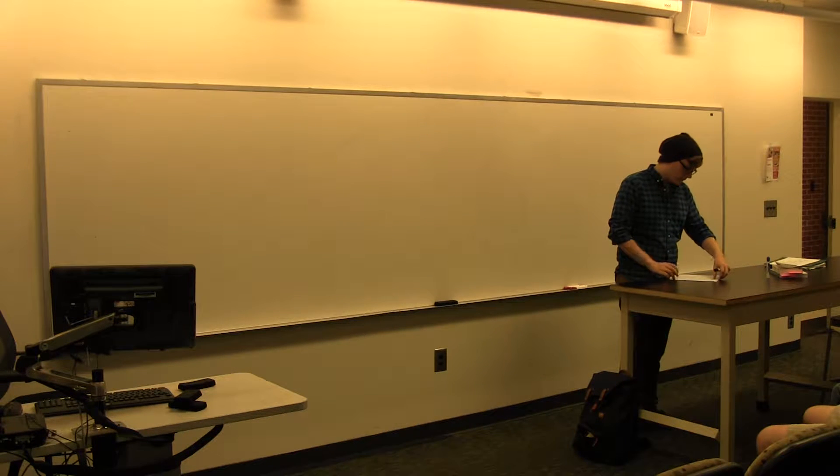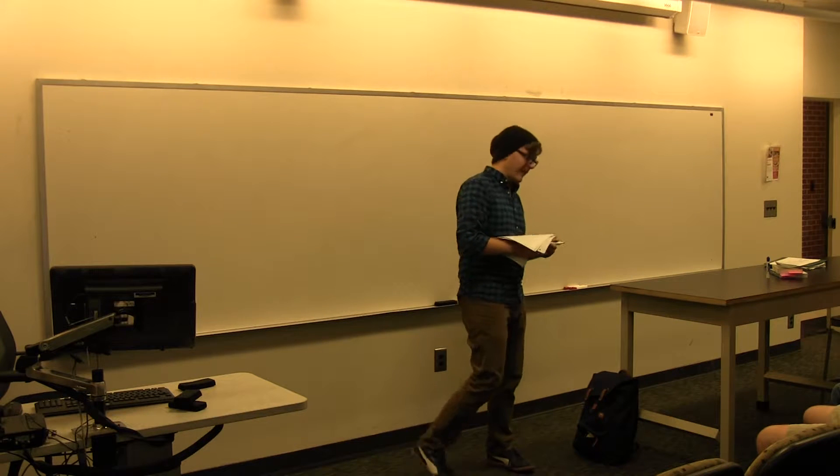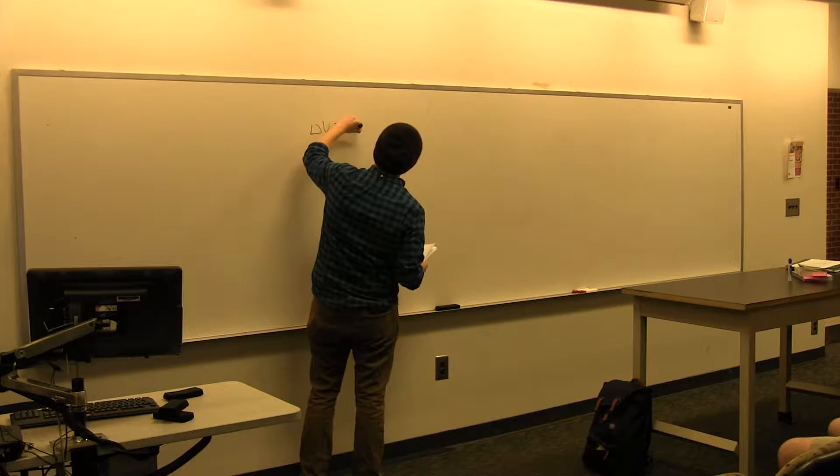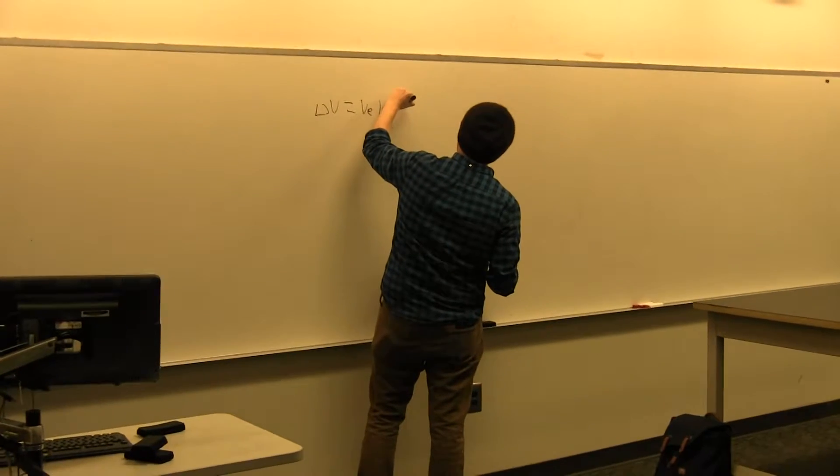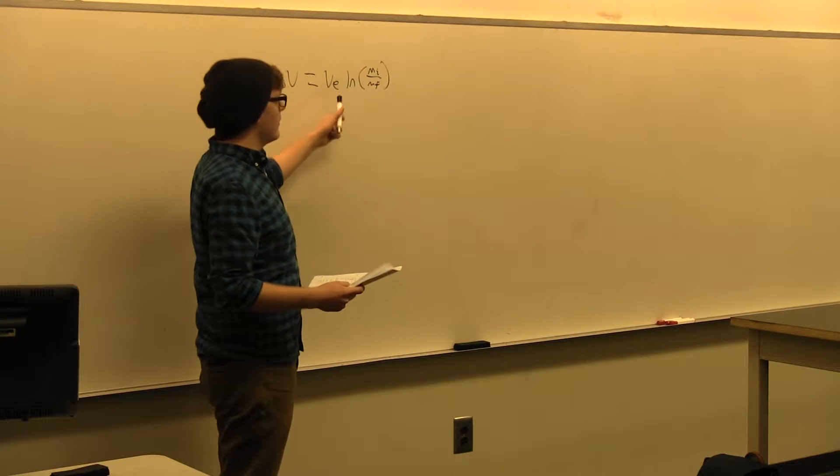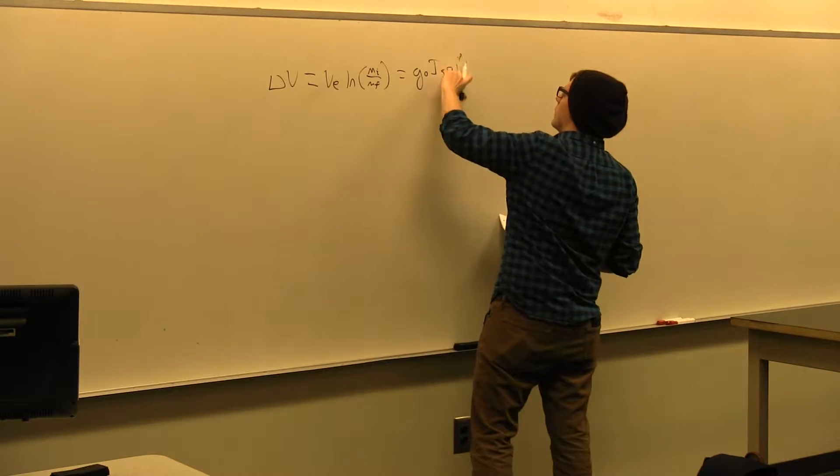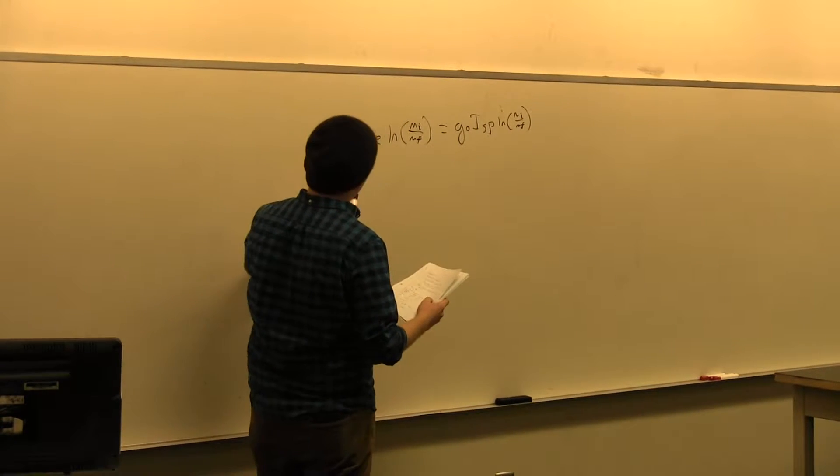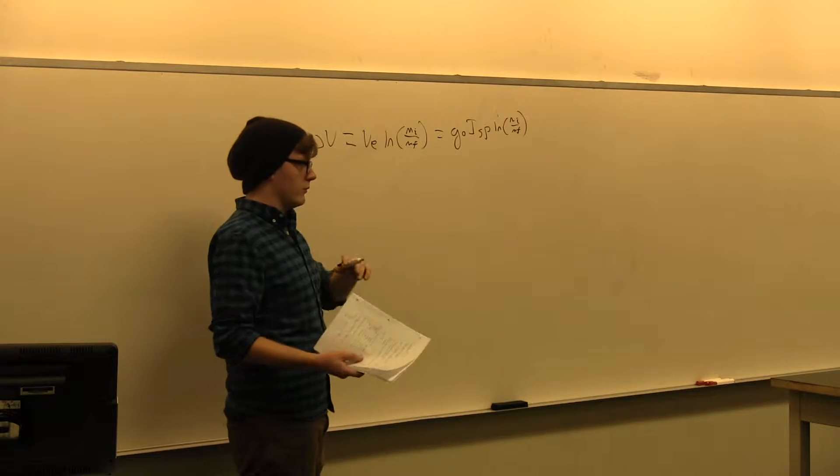I think a good place to start is basically at the start of your mission, which is launch. So we can begin with the idealized rocket equation, which I'm sure a lot of you have heard of. That is delta V is the exit velocity of your gas times the natural log of the initial mass over the final mass of your rocket. Now the ISP is just the exit velocity divided by the reference acceleration of gravity.